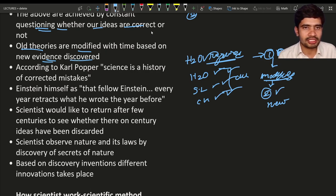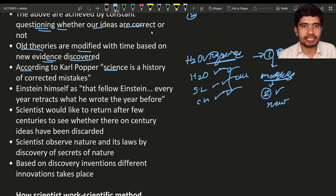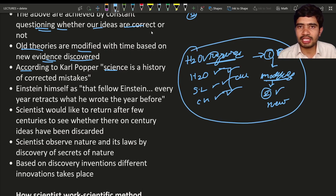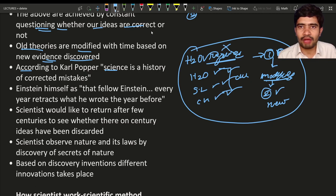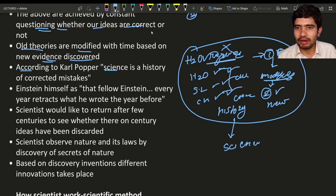Based on new evidence discoveries, old theories may be replaced. According to Karl Popper, science is a history of corrected mistakes. In the photosynthesis example, we corrected one mistake — the idea that only water is required was not correct. We corrected it, and that correction became part of history. Hence, corrected history is known as science, according to Karl Popper.